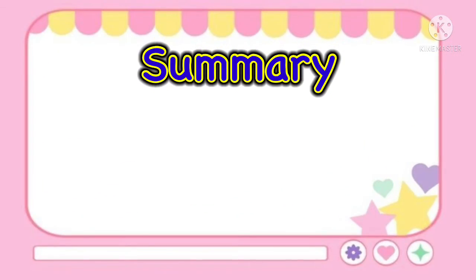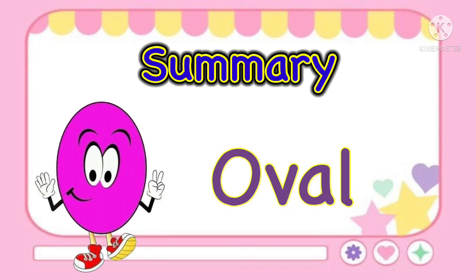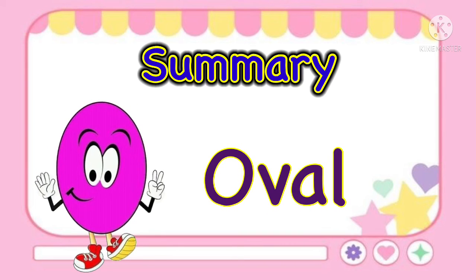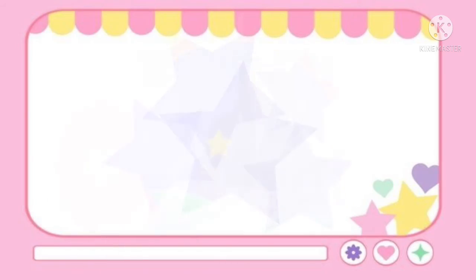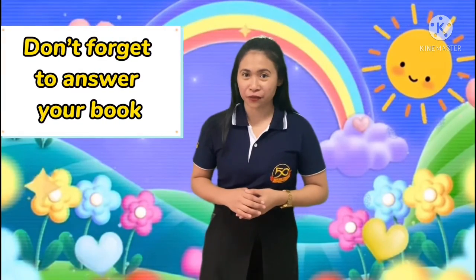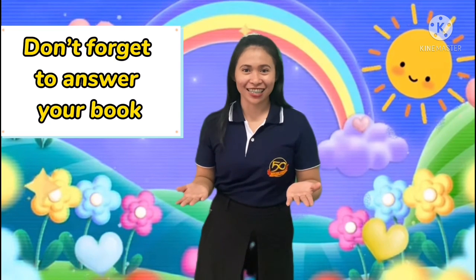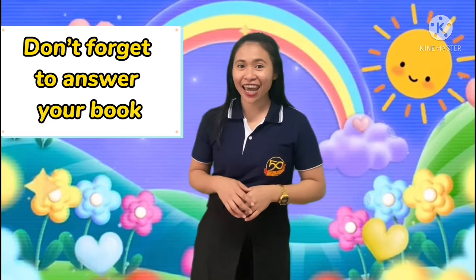Before we end, let's summarize our lesson today. What shape did we learn? Very good — it is all about oval. Oval. Don't forget to answer your book, kids. That's the end of our lesson. Have a great day. Goodbye.